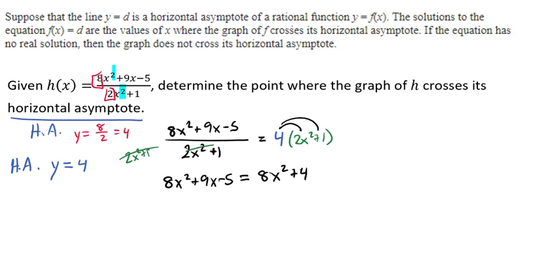And now we're going to solve. So we'll subtract the 8x squareds. Those cancel out. So now we have 9x minus 5 equals 4. We'll add the 5 over. And here we have 9x equals 9. So we divide by 9 and get x equals 1.